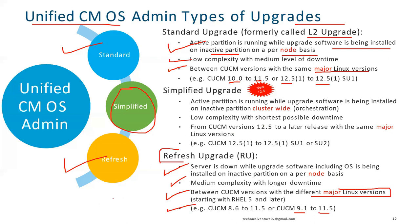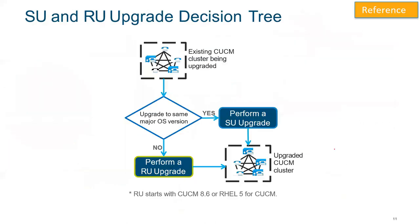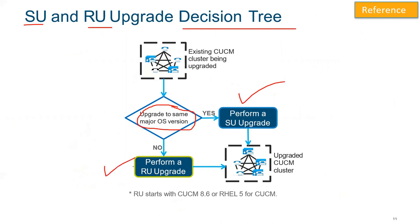The simplified upgrade is available when you are already on 12.5. In this mode, the active partition is running while upgrade software is installed on the inactive partition — and this is cluster-wide. It is low complexity with the shortest possible downtime. It applies to CUCM versions 12.5 or later with the same major Linux version — for example, 12.5.1 to 12.5 SU1 or SU2. Whether the system performs a standard or refresh upgrade is determined by whether you are upgrading to the same major OS version or a different one.